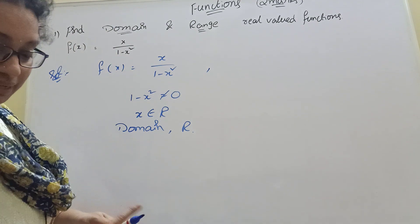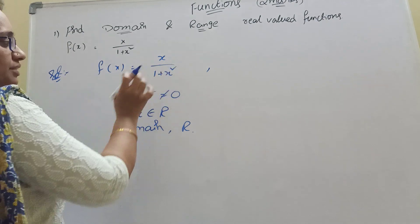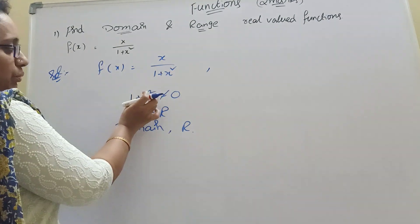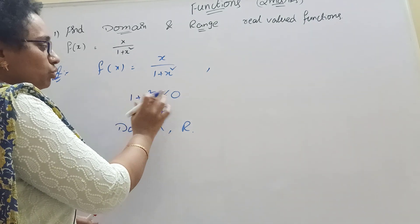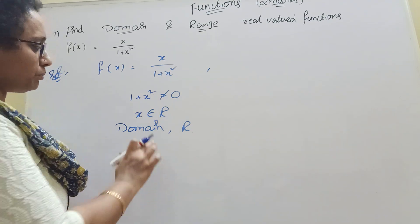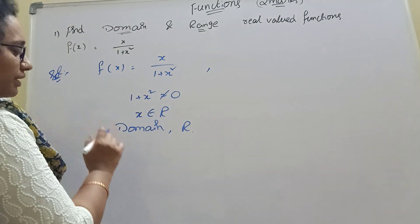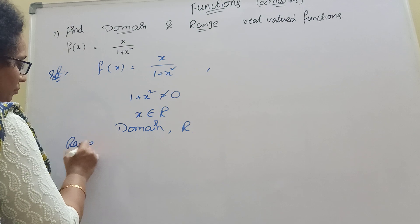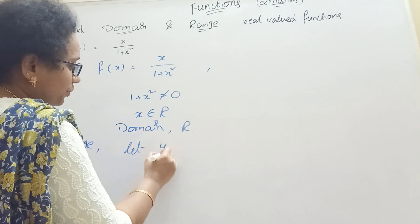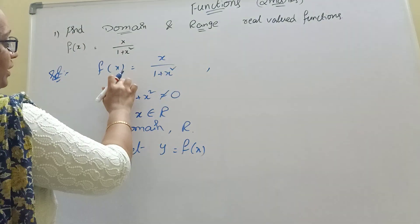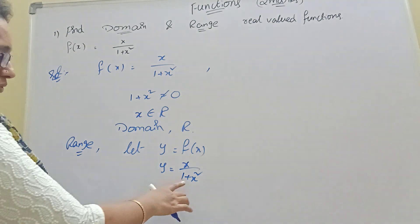The problem is x is plus 1, minus 1. Plus 1 value, plus 1 are equal to 0. 1 plus x square, that means square form — x is squared. Positive value function. Domain is R. Now we will use the range. This function is y. Let y equal to f of x. Let y equal to f of x — x square, okay — y equal to x by 1 plus x square.